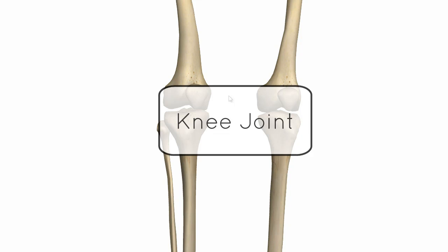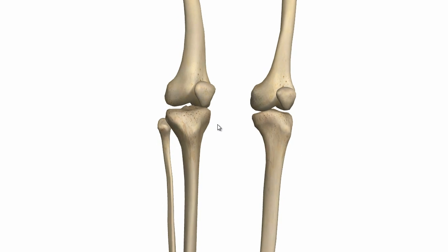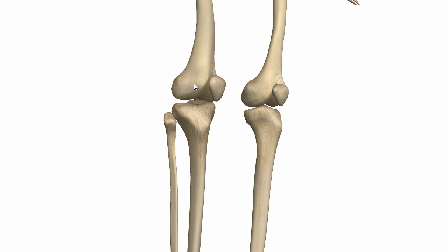This is a tutorial on the knee joint. The knee joint is the largest synovial joint in the body, and it consists of articulations between the femur and the tibia, and also between the patella and the femur.